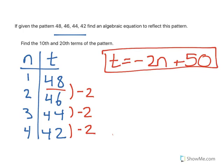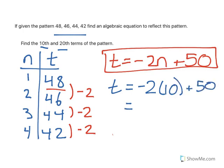Now that we have our algebraic equation to show what our pattern is, we can figure out the tenth and the twentieth terms as asked. So I'll start with t equals minus 2. n is the number from the pattern that we're looking for, so 10 in this case plus 50. So equals negative 2 times 10 is negative 20, plus 50 equals 30. So the tenth term is 30.